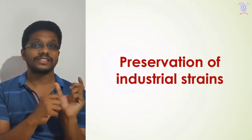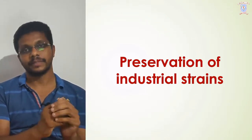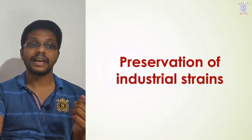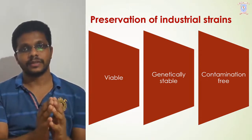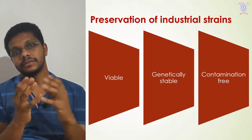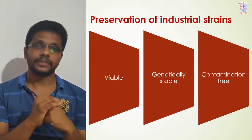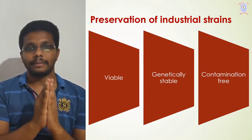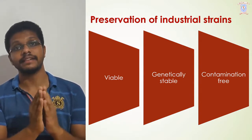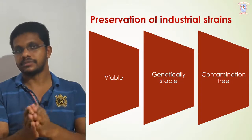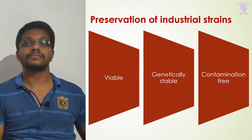We must understand this is not just storage of microorganisms — we are talking about preservation of industrial strains. When we are preserving an industrial strain, there are three major important objectives that must be kept in mind when discussing each and every method used for preservation. The first one is viability. Any method used for the preservation of an industrial strain should maintain the viability of the microorganism. If we are preserving a microorganism today for 10 years, after 10 years the microorganism should be viable.